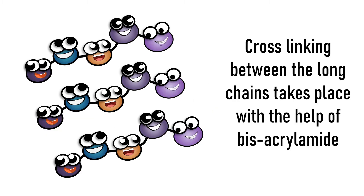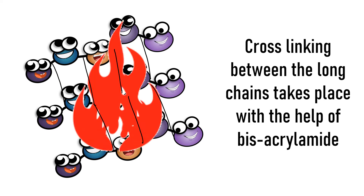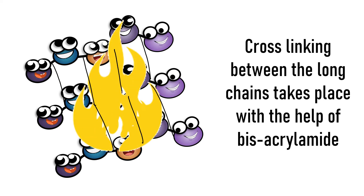The bisacrylamide creates cross-linking between the linear chains to create a 3D gel matrix. The process of polymerization is exothermic.